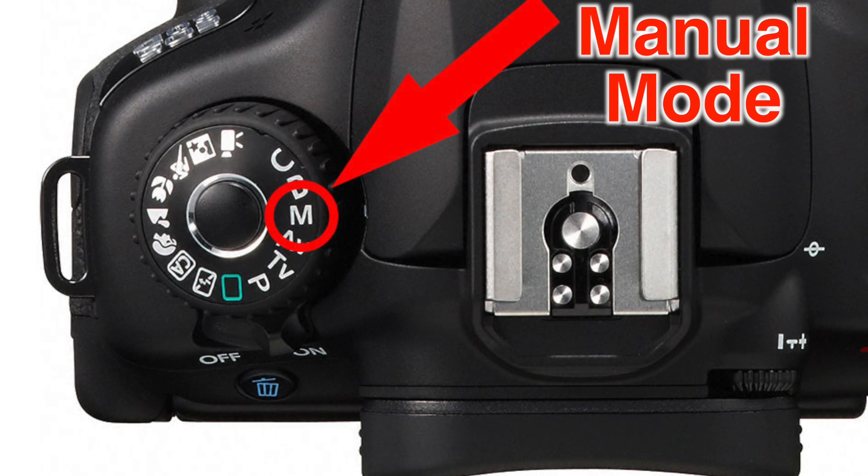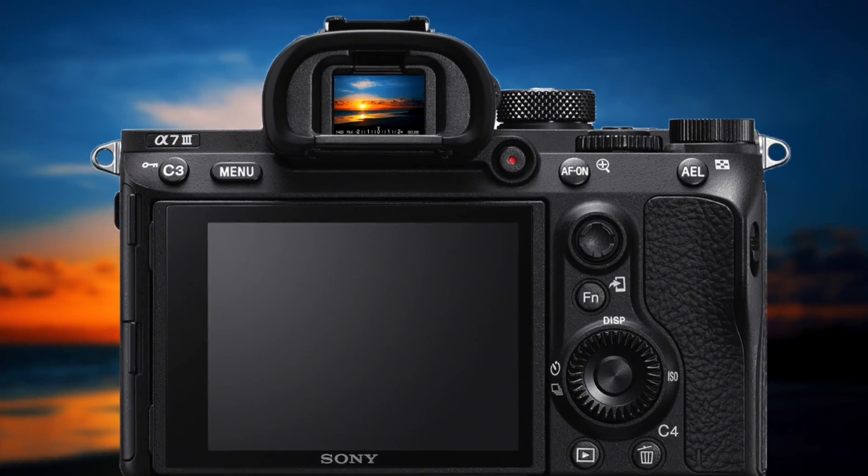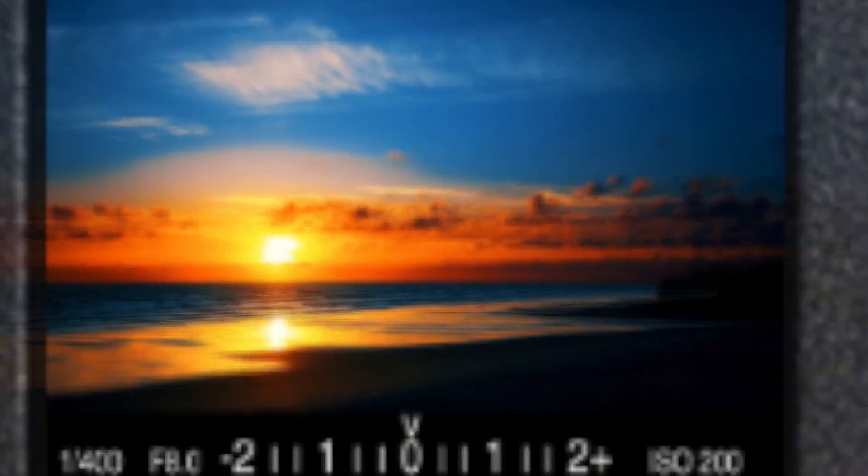When your exposure is set properly, a change in any one of these settings will require an equivalent change in one or more of the other settings. In order to control all of these settings, you need to be shooting in manual mode. But how do you know if your exposure is set properly? Let's take a look at the exposure meter inside your camera.